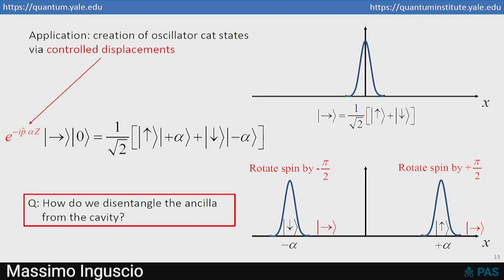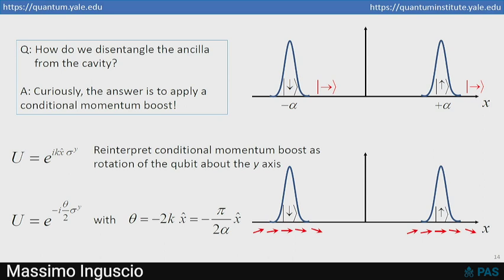So to disentangle the ancilla from the cavity, you could do it by measurement, but I want to do it in a deterministic way. You have to do something very strange. If the position of the oscillator is positive, you have to rotate the qubit by plus pi over two around the y-axis. If the position of the oscillator is negative, you have to rotate the qubit by minus pi over two. How can I possibly do that?